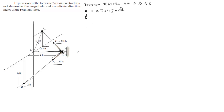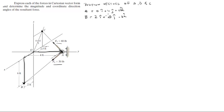Position vector B is also easily found: 2i + 0j - 6k. It's going positive 2 in the x direction, zero on the y, and straight down on the z which means negative 6.